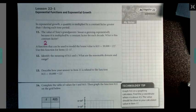A function that can be used to model the house value is h(t) = 10,000 times 2 to the t. Use this function for items 12 through 17. Identify the meaning of h(t) and t, and what are the reasonable domain and range?